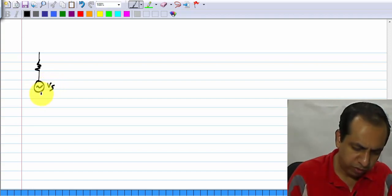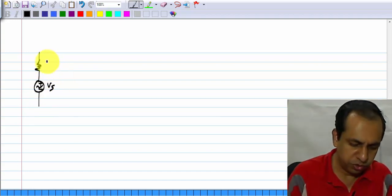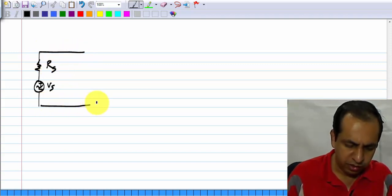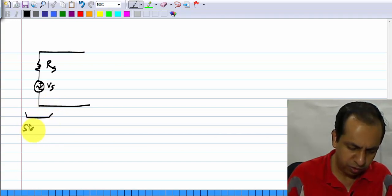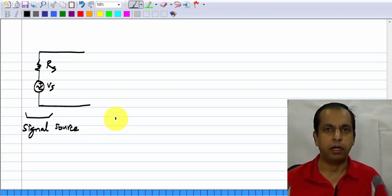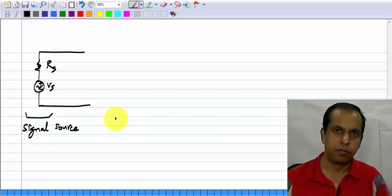We will now assume that we have a signal source Vs with a resistance Rs. This is the representation of any source. Signals can come from some sensors, let us say the microphone into which I am speaking, and it can be from some other stage, let us say another amplifier output or it can be anything. The bottom line is it always can in general be represented by a voltage source in series with a resistance.